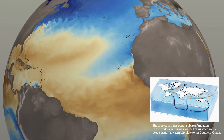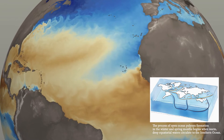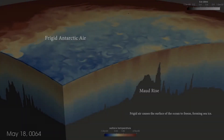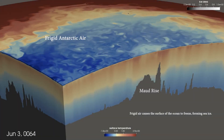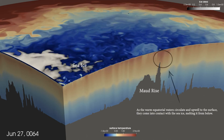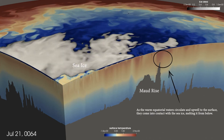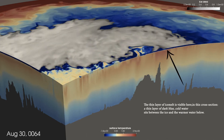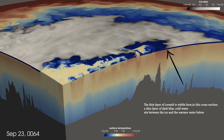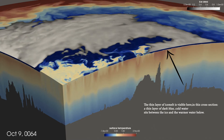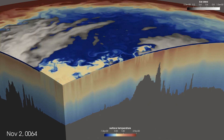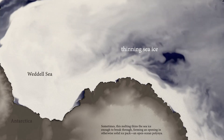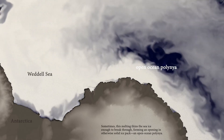The process of open-ocean polinia formation in the winter and spring months begins when warm, deep equatorial waters circulate to the southern ocean. Frigid air causes the surface of the ocean to freeze, forming sea ice. As the warm equatorial waters circulate and upwell to the surface, they come into contact with the sea ice, melting it from below. The thin layer of ice melt is visible here in this cross-section. A thin layer of dark blue, cold water sits between the ice and the warmer water below. Sometimes, this melting thins the sea ice enough to break through, forming an opening in otherwise-solid ice pack — an open-ocean polinia.